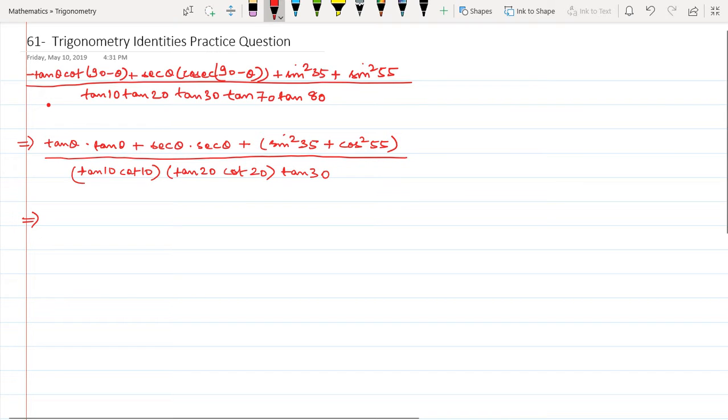Now look at this: this is tan squared theta plus sec squared theta plus 1, divided by—this is 1, this is 1, this is 1—and tan 30 is equal to...